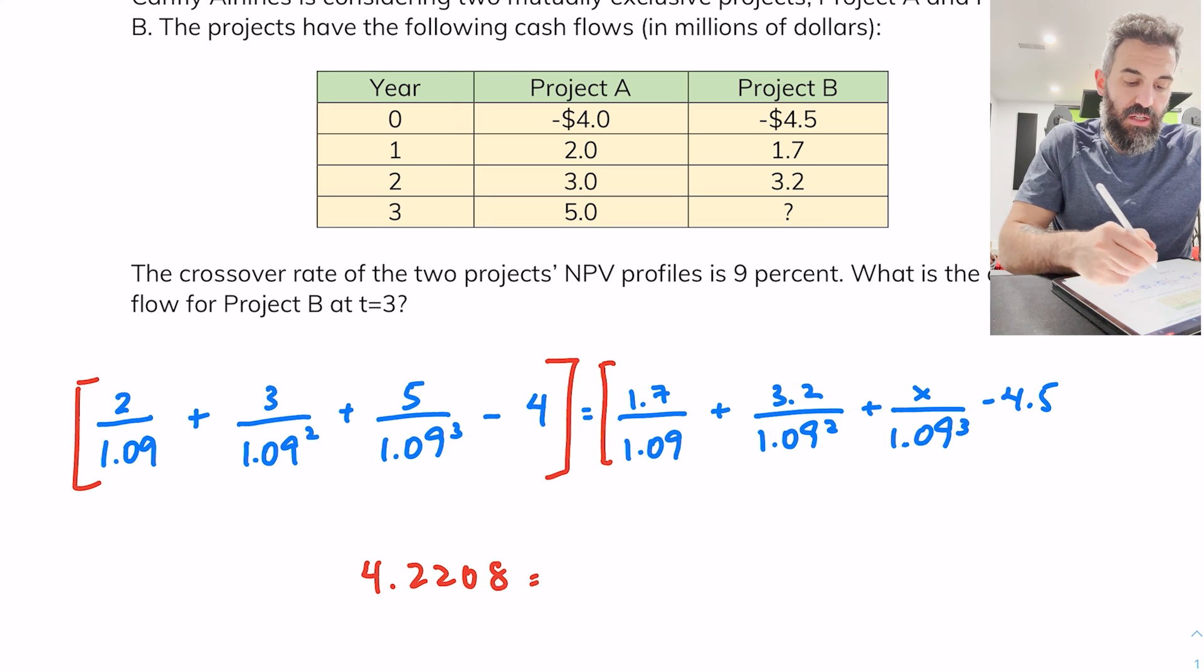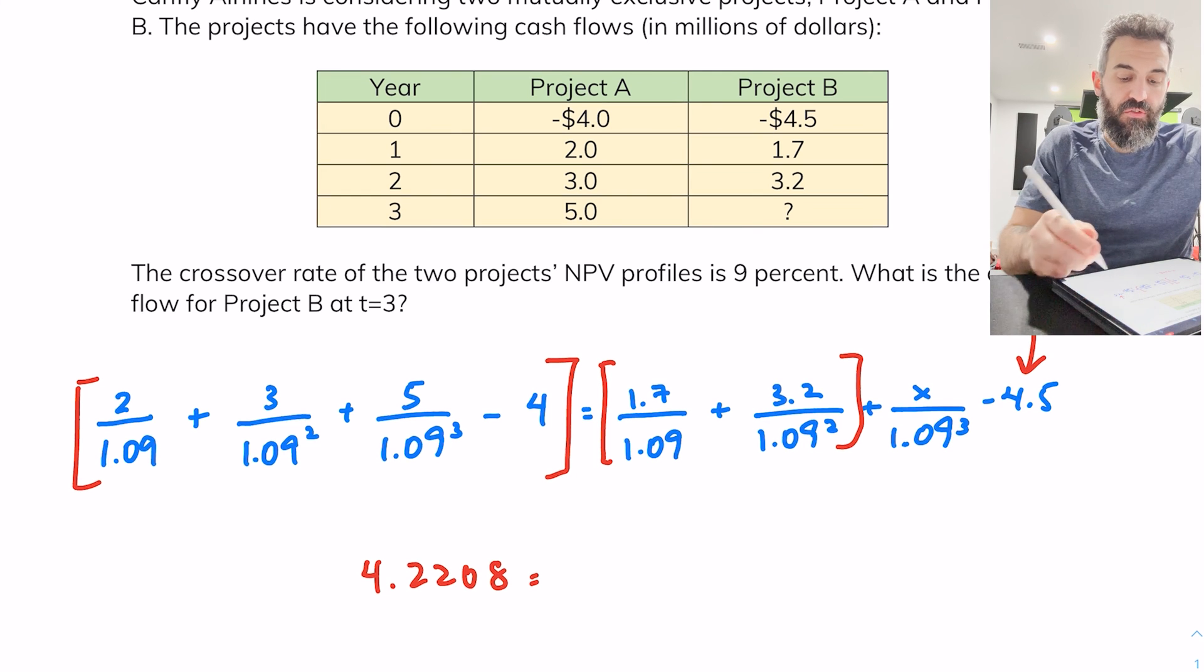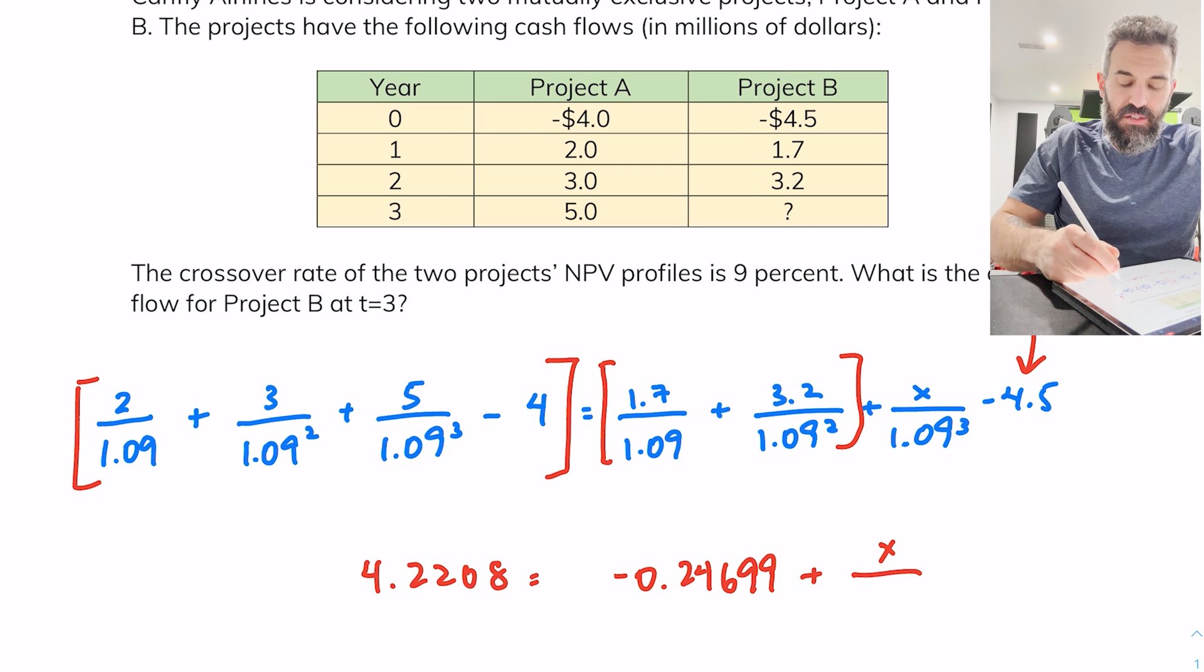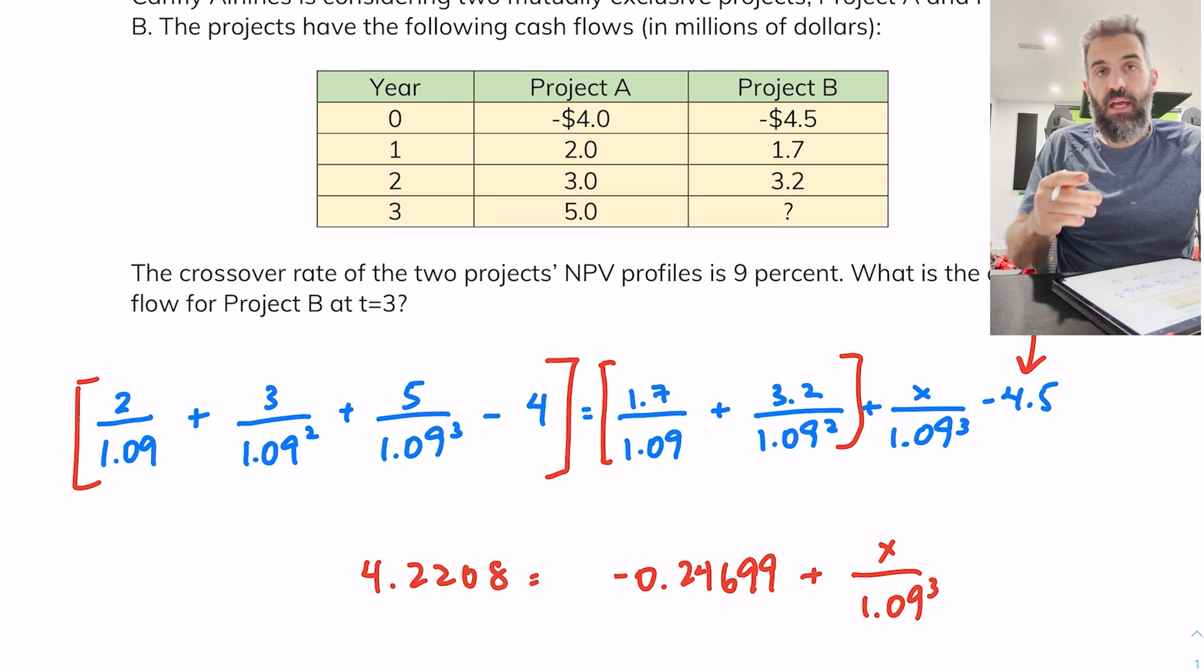On the right-hand side I would start by punching in these two and then subtracting the 4.5, essentially leaving out the unknown. So I get negative 0.24699 plus x over 1.09 cubed, and now I'm going to just keep working out the algebra until I get to my final answer.